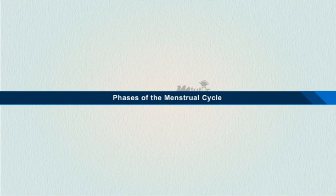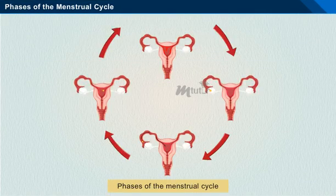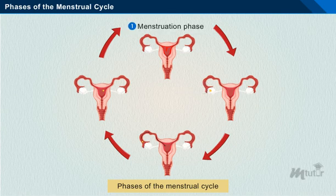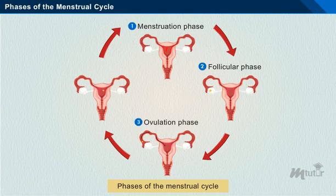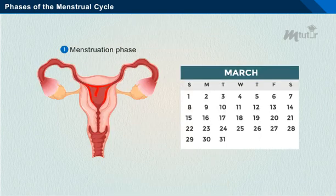Phases of the Menstrual Cycle. Naturally, there are four phases of the menstrual cycle, which include the menstruation or menstrual phase, the follicular phase, the ovulation phase, and finally the luteal phase. Let's see what happens in each phase of the menstrual cycle.